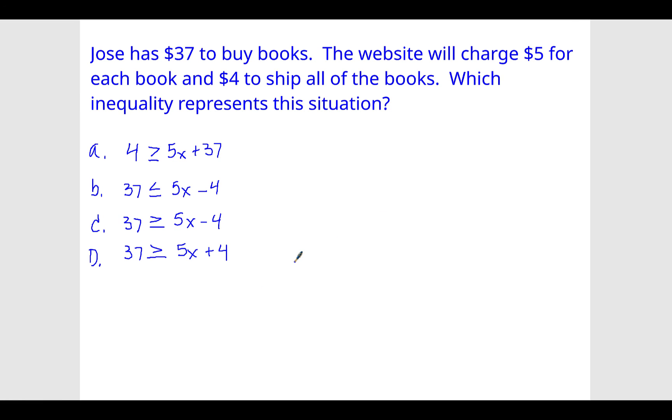Jose has $37 to buy books. The website will charge $5 for each book and $4 to ship all of the books, which inequality represents this situation. So same thing. We're going to use y equals mx plus b. Again, it's not going to be an equal sign. It's going to be an inequality.